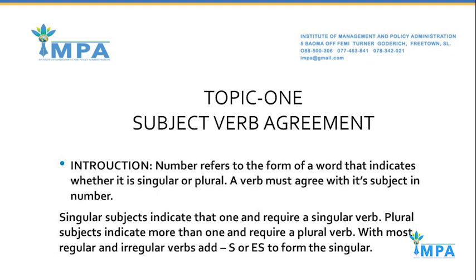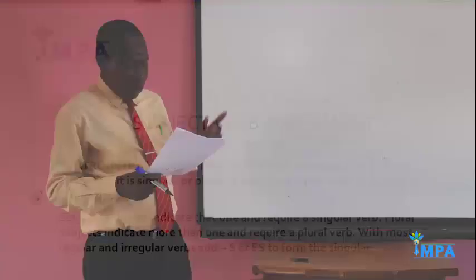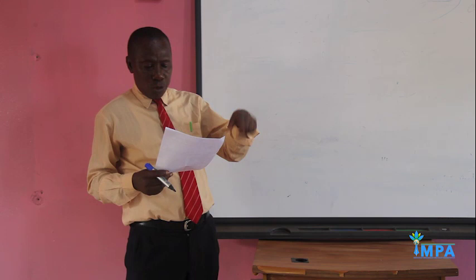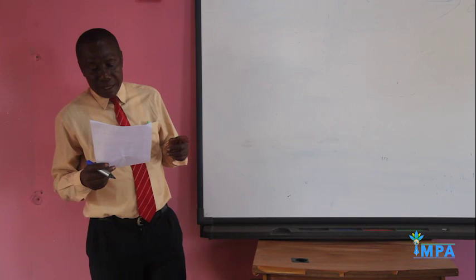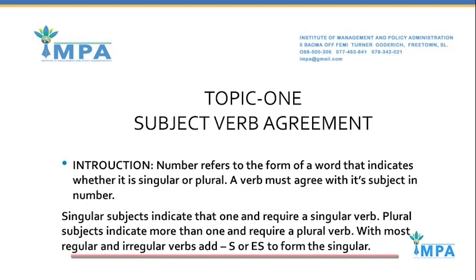Number refers to a form of a word that indicates whether it is singular or plural. When a subject is singular, it should go with a singular verb. When a subject is plural, it should go with a plural verb. A verb must agree with a subject in number. Singular subjects indicate one and require a singular verb. Plural subjects indicate more than one and require a plural verb.